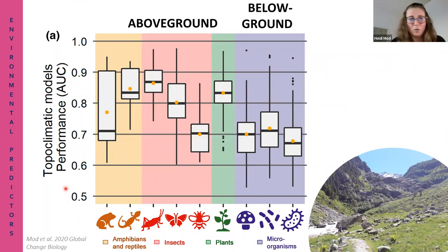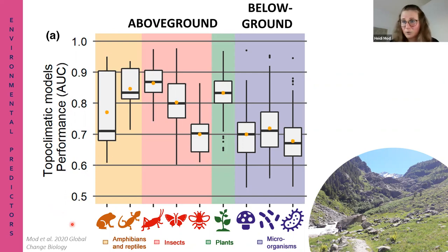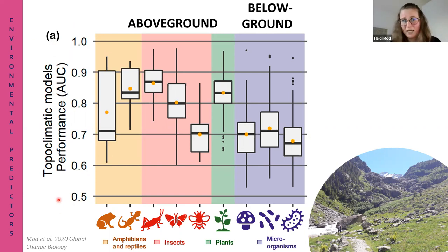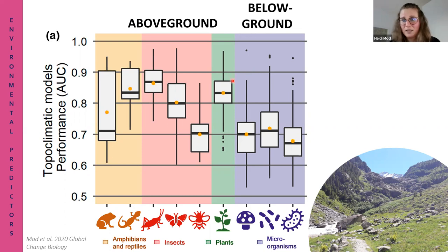The graph shows model performance - how well climatic and topographic variables can explain distribution of different species groups, including amphibians, reptiles, grasshoppers, butterflies, bumblebees, plants, fungi, soil bacteria, and protists. The measure used is AUC, ranging from 0.5 (no better than random) to 1 (perfect). With climatic and topographic variables, we can model distribution reasonably well for grasshoppers, amphibians, reptiles, butterflies, and plants. But for all three groups of microorganisms, the models performed very poorly - so if we used only available data to model soil microorganisms, we wouldn't go very far.